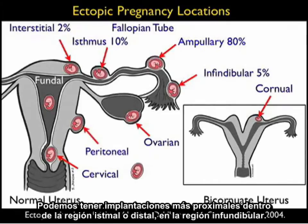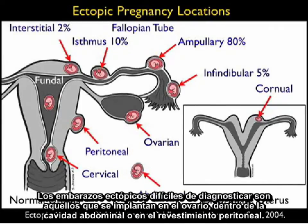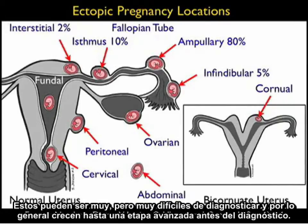We can have implantations more proximal within the isthmal region or distal within the infundibular region. Tough ectopics to diagnose are those that implant within the ovary, within the abdominal cavity, or within the peritoneal lining. These can be very hard to diagnose and commonly grow to an advanced stage before diagnosis.